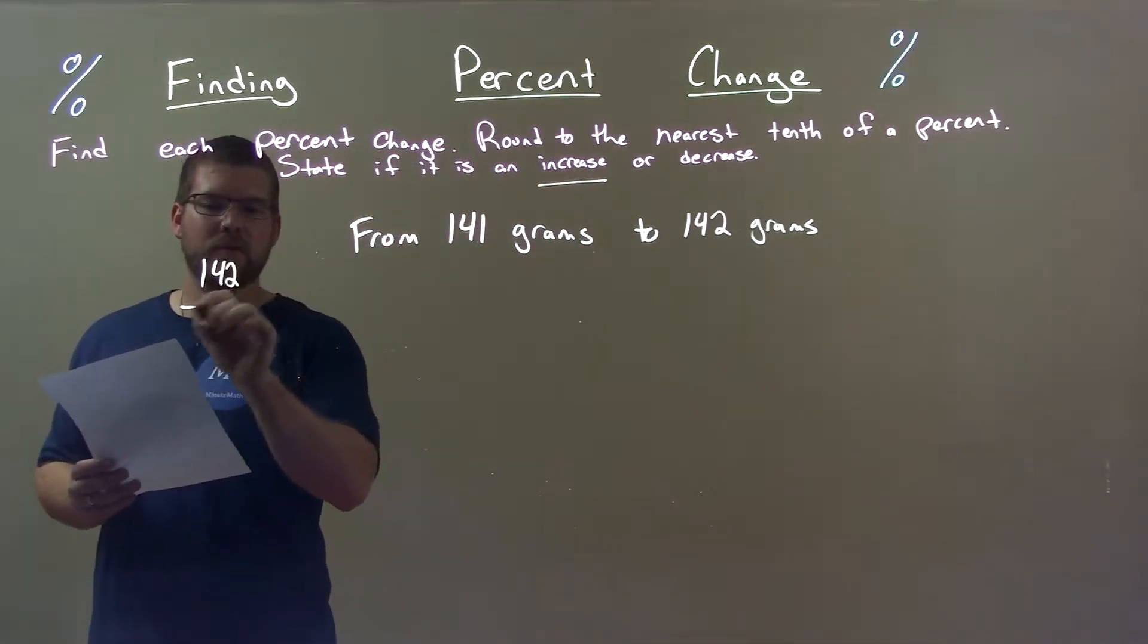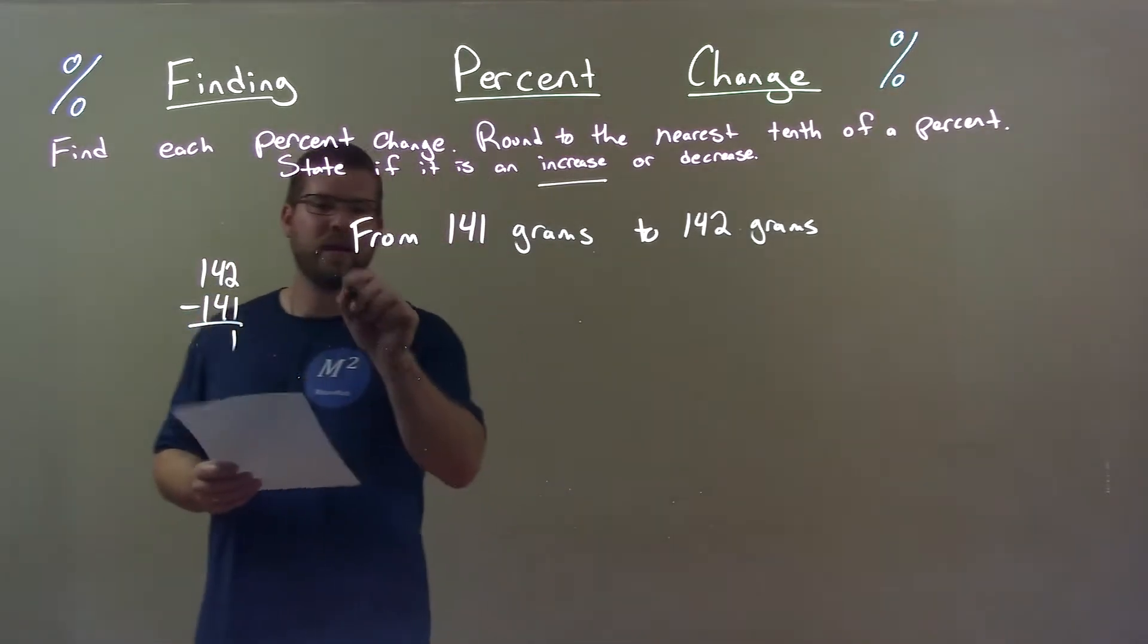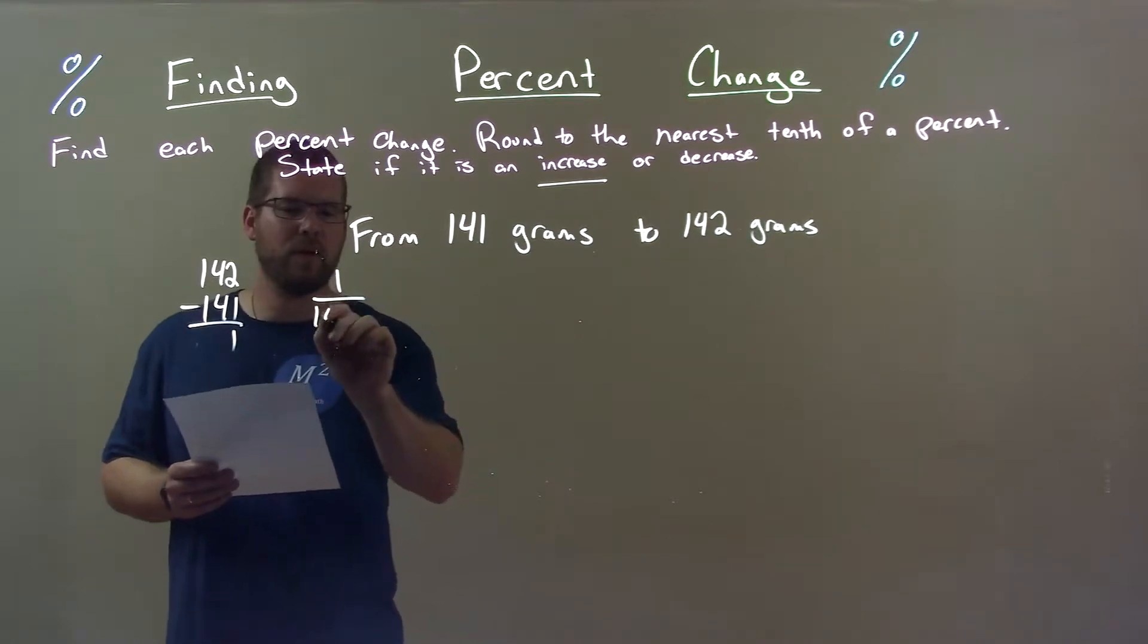Large number, 142, subtracted by a smaller number, 141. You know this, it's just one. Take that number one, divide it by the first number, 141.